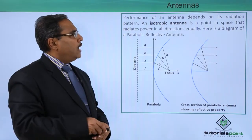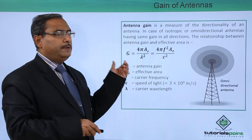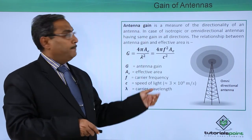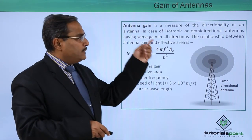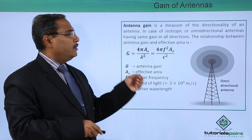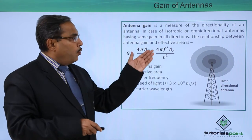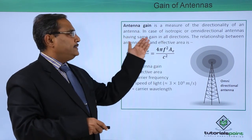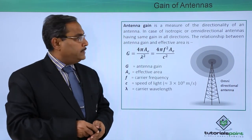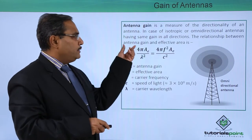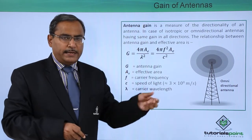Now we shall discuss how to calculate the respective gain of an antenna. Antenna gain is a measure of the directionality of an antenna. In case of isotropic, also known as omnidirectional antennas, they have the same gain in all directions. The relationship between antenna gain and effective area is: